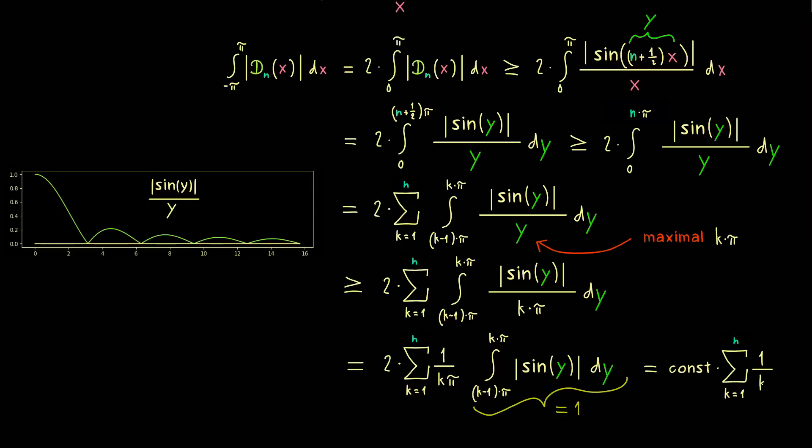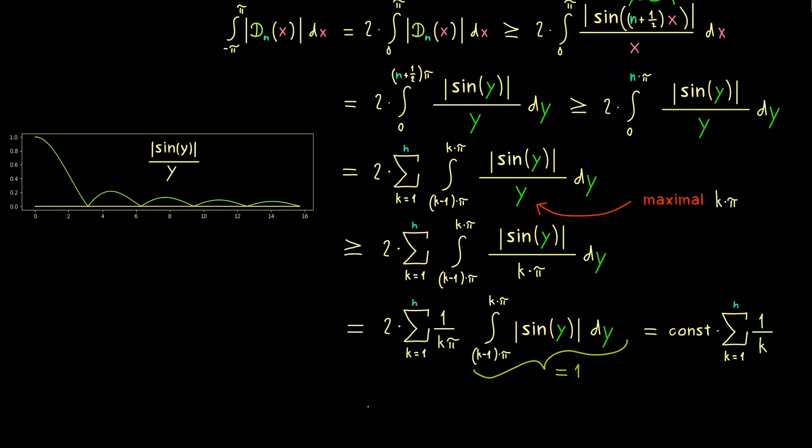This means what we get here is a constant factor times a sum over 1 over k. And there we know this is exactly the harmonic sum, which is divergent. So if we send n to infinity, the right hand side goes to infinity, and therefore also the left hand side. And that's it, this finishes the proof. So we see in the limit n to infinity, this Dirichlet kernel is not simple at all. And this also explains why the whole Fourier series theory is not so simple.